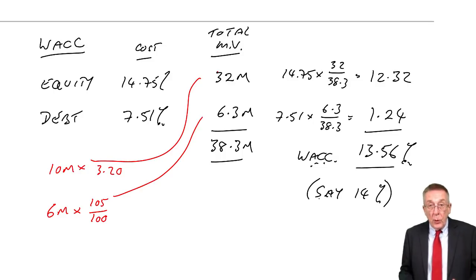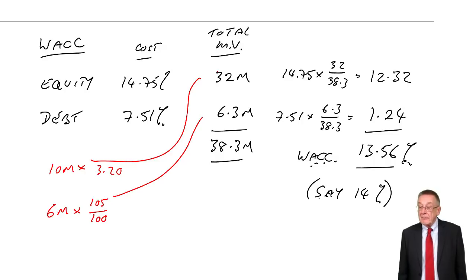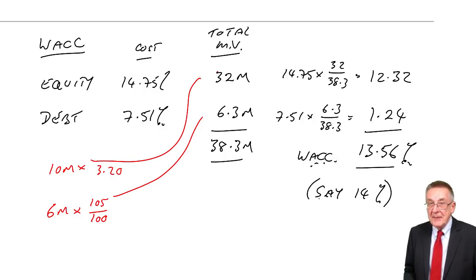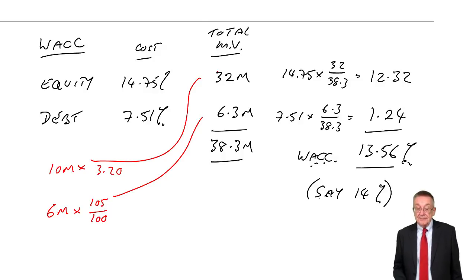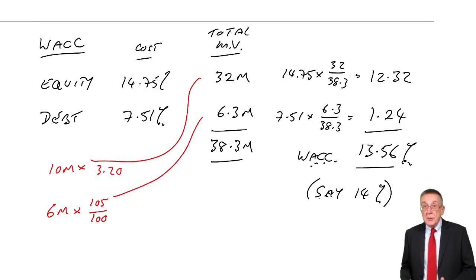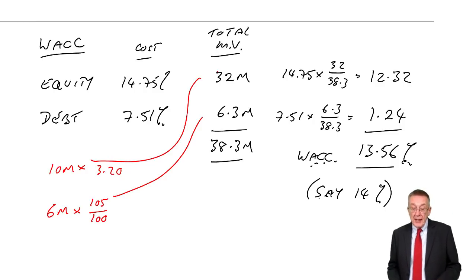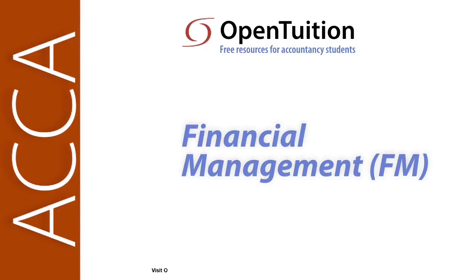I've said that normally that's the rate at which we will discount projects when deciding whether to accept or reject. However, we do need a bit of a discussion around it. Why do I discount at that rate, and when wouldn't we discount at that rate? That's the next chapter, chapter 18, which is a fairly short chapter but introduces two theories that you're expected to be aware of.